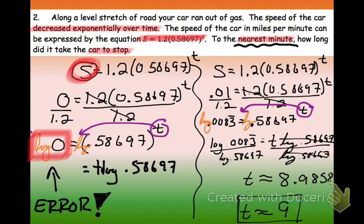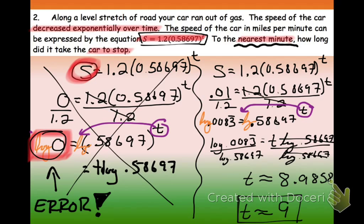If your car is decreasing at that rate, the speed of it is decreasing at that rate, it will take about nine minutes for it to stop completely. So again, if you didn't write this one down, that's okay. That's showing you that the log of 0 cannot be used. So you have to find another method. So find something that's pretty close, like really, really slow, 0.01 miles per minute. And you'll get something really close to the answer. And it's important that it says to the nearest minute in the problem here.